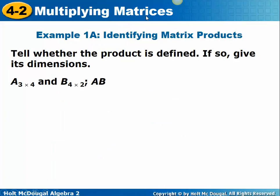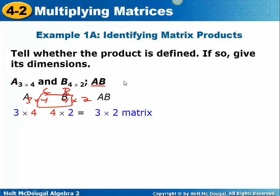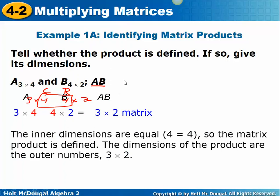Now we're going to see if we can or cannot multiply these matrices — they're just telling us the dimensions. If A is a 3 by 4 and B is a 4 by 2, could you multiply A times B? Because the 4 matches the 4 — columns and rows are the same — the CAR will start. We are able to multiply these two matrices, and the new dimensions would be 3 by 2.